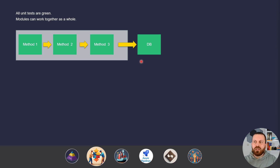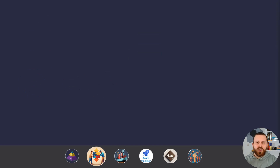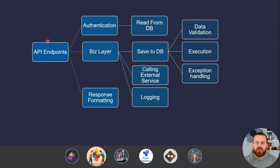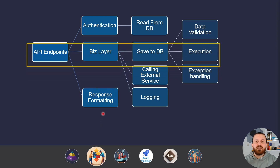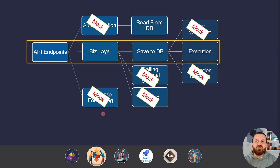By border components I mean something like files, network, and databases. If you have a process like that — an execution plan with one API endpoint, authentication, a business layer, and maybe a response formatter — you need to pick one process, one flow, and mock the rest of the things that you have.